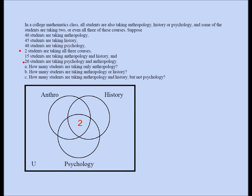15 took anthropology and history. The 'football' region between anthropology and history — including the center — should sum to 15. It doesn't say 15 took only anthropology and history, in which case 15 would go in just that one region. Since it says 15 took anthropology and history, 15 is the sum of that football. So the part of the football excluding the center must be 13, because 13 plus 2 is 15. Some of these people also took psychology, which is accounted for.